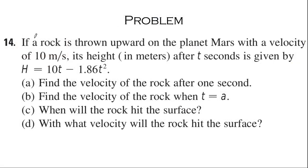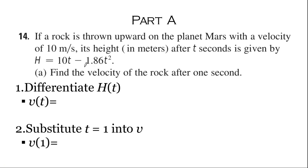Okay, so this is our problem here with four parts. It reads: if a rock is thrown upward on the planet Mars with a velocity of 10 meters per second, its height in meters after t seconds is given by H equals 10t minus 1.86t squared.